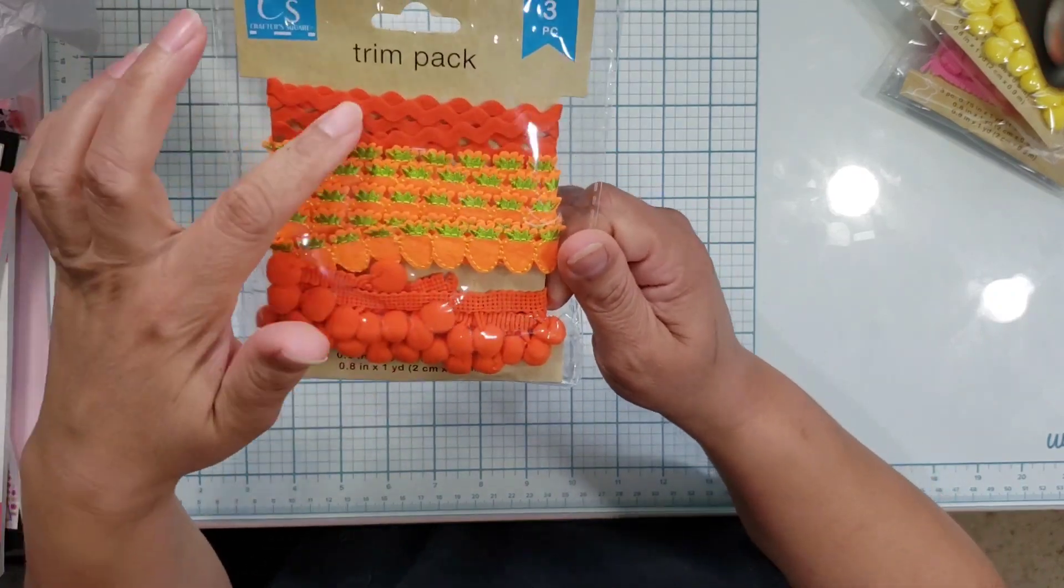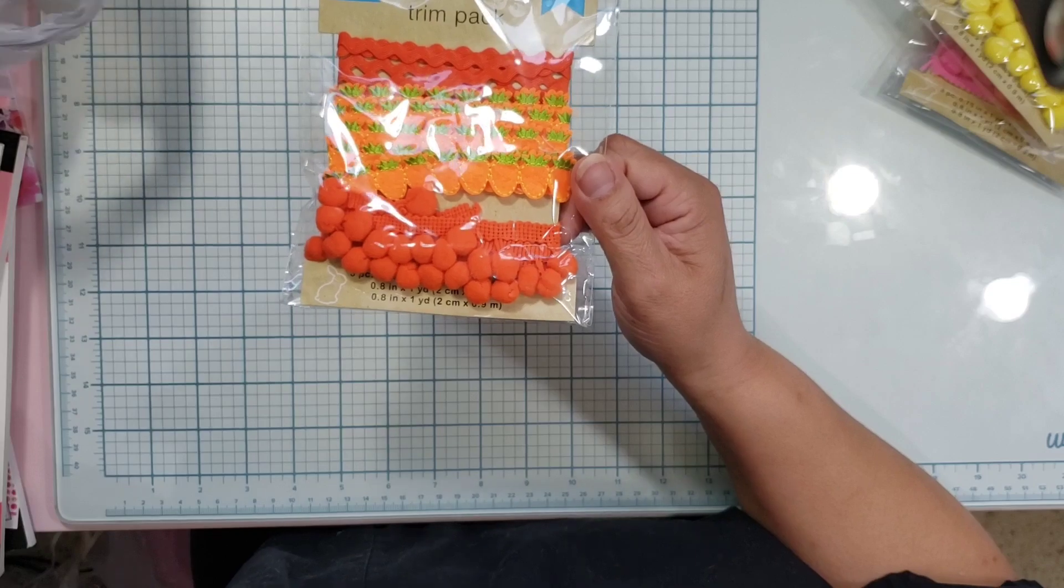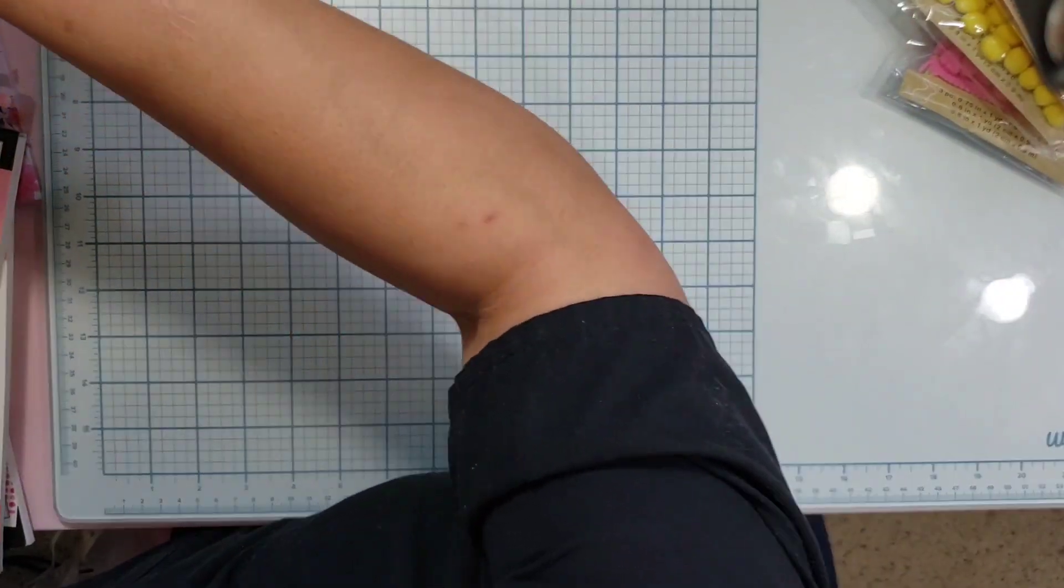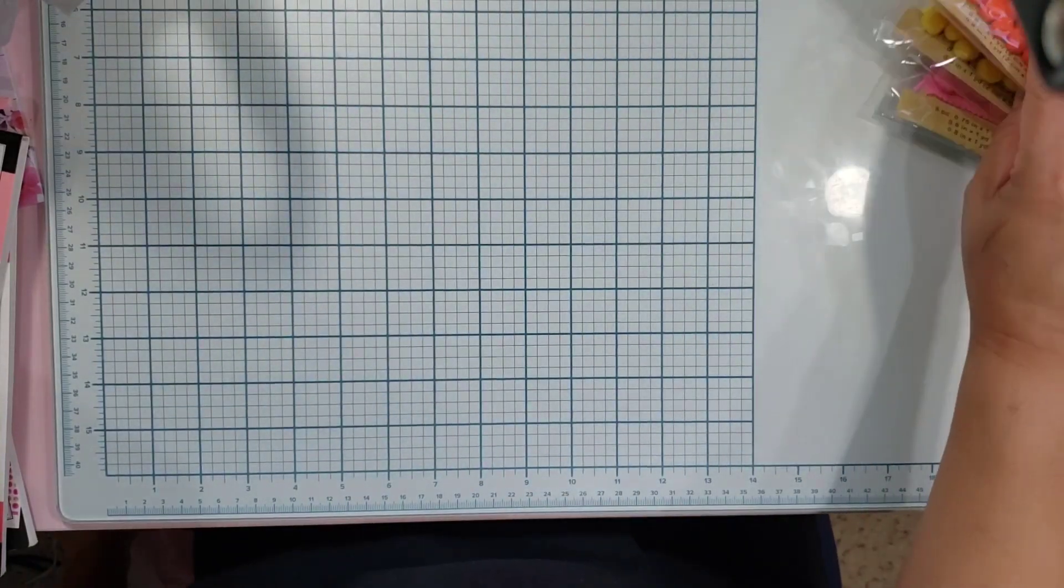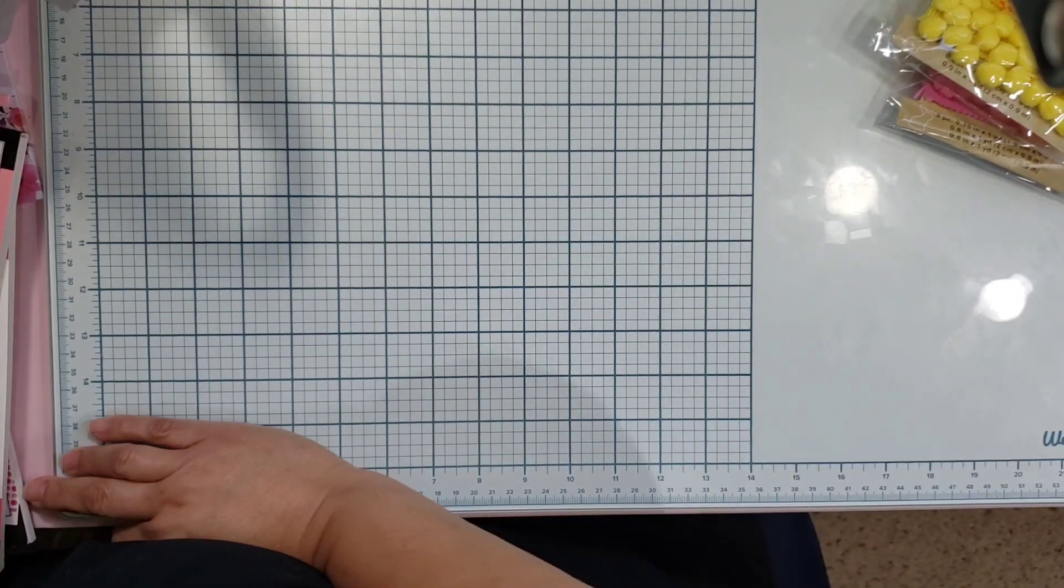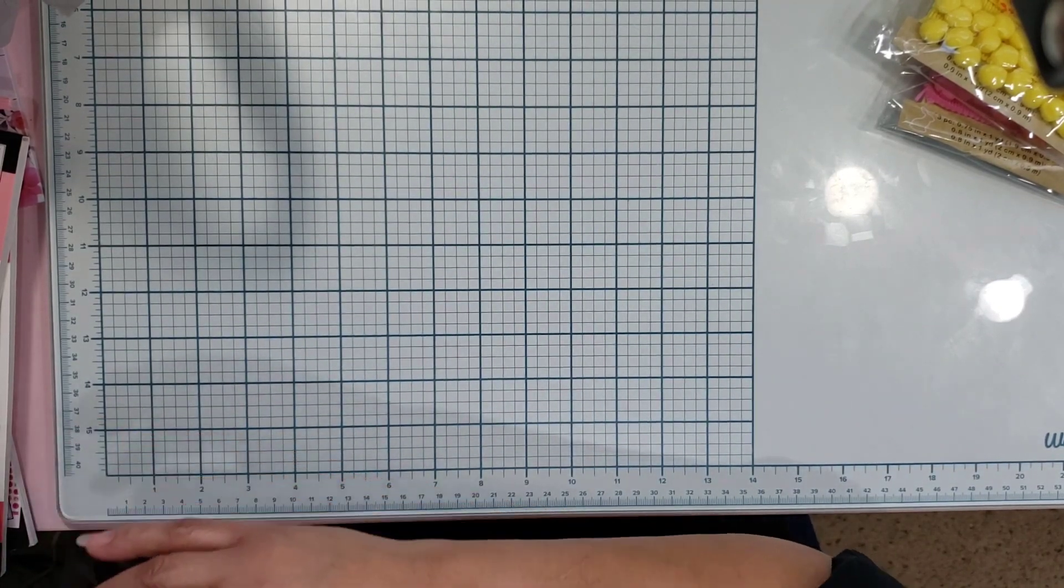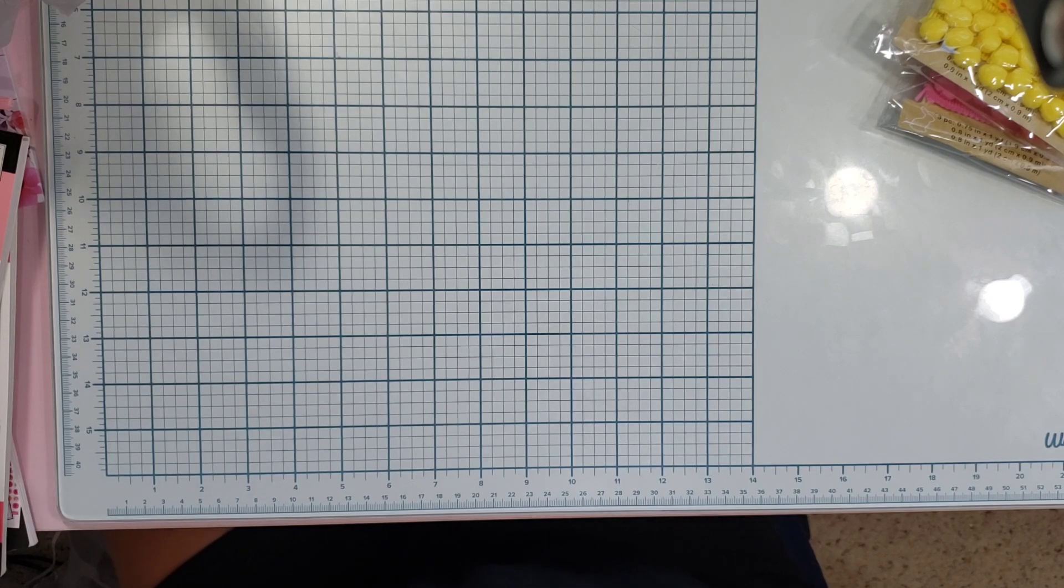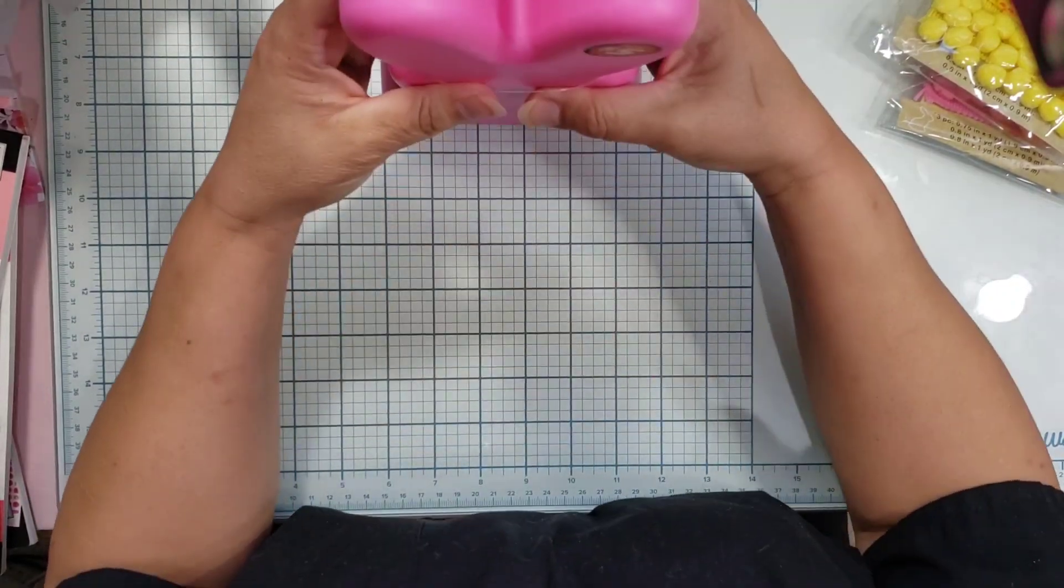I think that was it for the regular priced items. Now the last thing I found, which I've been looking everywhere for, this is probably like the seventh Dollar Tree I hit to finally find the peeps.